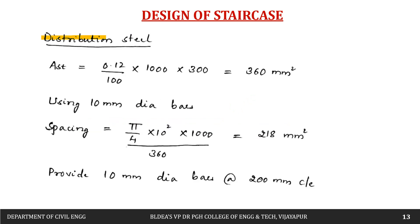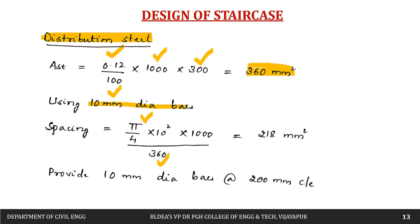For distribution steel, provide minimum reinforcement of 0.12% of gross area = (0.12/100) × 1000 × 300 = 360 mm². Assuming 10 mm diameter bars, spacing = (π/4 × 10² / 360) × 1000 = 218 mm. Provide 10 mm diameter bars at 200 mm center to center.